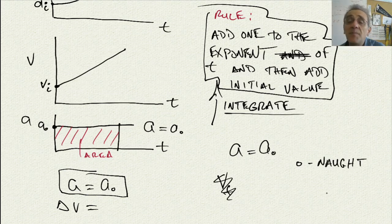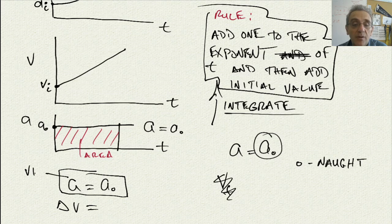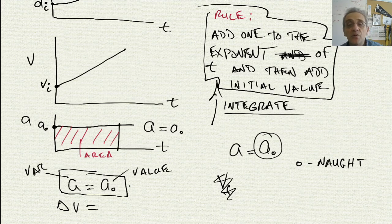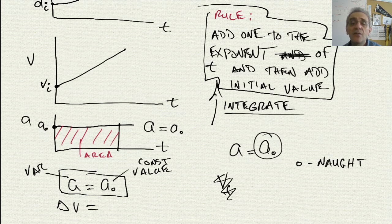To clarify: when I say a naught, it means that this is a constant value, not a variable. A is the variable; a naught is a fixed constant value. So a naught is wherever that flat line sits on the graph. Sometimes in physics it refers to an initial value, but here I'm just using it to represent a constant value.